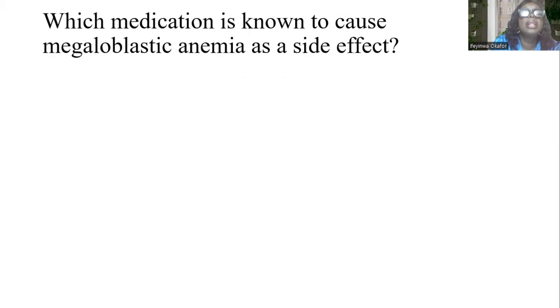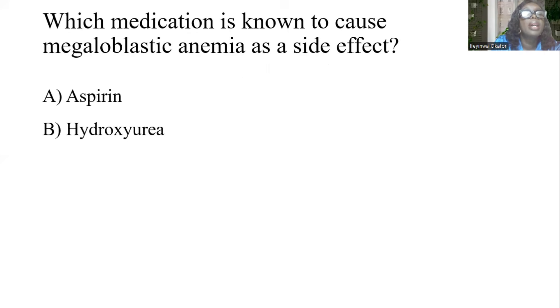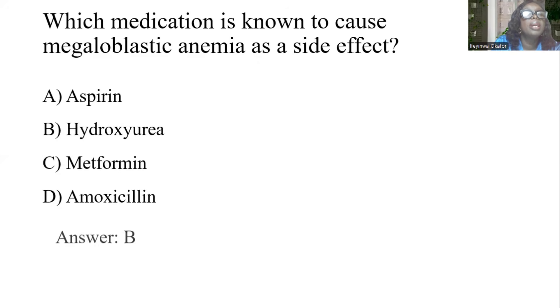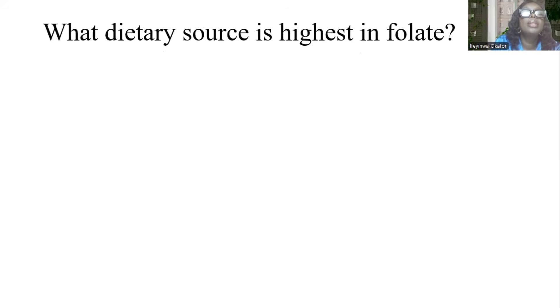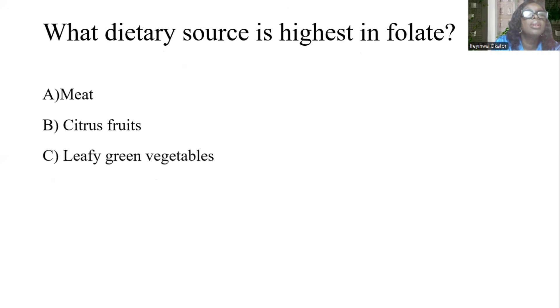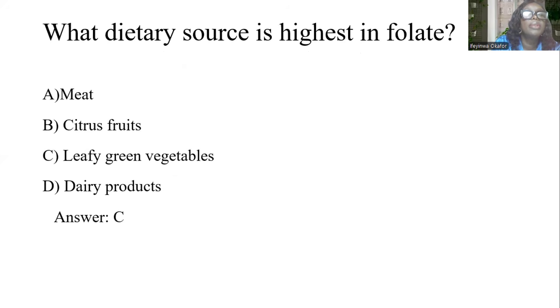Which medication is known to cause megaloblastic anemia as a side effect? A, aspirin. B, hydroxyurea. C, metformin. D, amoxicillin. And the answer is B. What dietary source is highest in folate? A, meat. B, citrus fruits. C, leafy green vegetables. D, dairy products. Answer is C, leafy green vegetables.